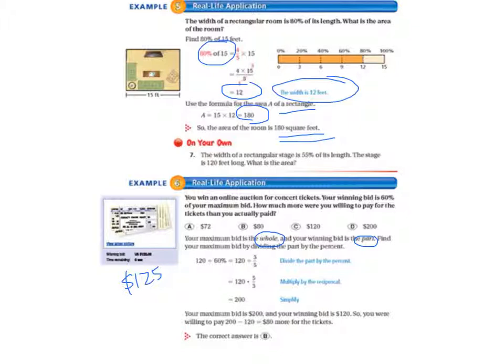So 120, that's the part, divided by 60 equals 120 divided by three-fifths. So 120 times five-thirds, multiplying by the reciprocal, because that's how we divide fractions, equals 200. So our maximum bid, what we were willing to pay was $200, and our winning bid was $120. So we were willing to pay $200 minus $120, so $80 more for the tickets than what we actually paid. So the correct answer was B.